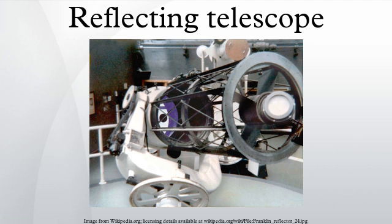In contrast, a mirror can be supported by the whole side opposite its reflecting face, allowing for reflecting telescope designs that can overcome gravitational sag. The largest reflector designs currently exceed 10 meters in diameter.